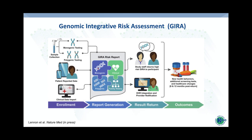The consortium decided that pure polygenic risk information is insufficient — it should be delivered in the context of broader health status and additional risk factors. As part of eMERGE, we also perform monogenic testing, collect family history through an online tool called Metri, and extract relevant clinical risk factors from electronic health records. We integrate all of this into one single report for ten conditions, returned to patients with lifestyle and interventional recommendations.